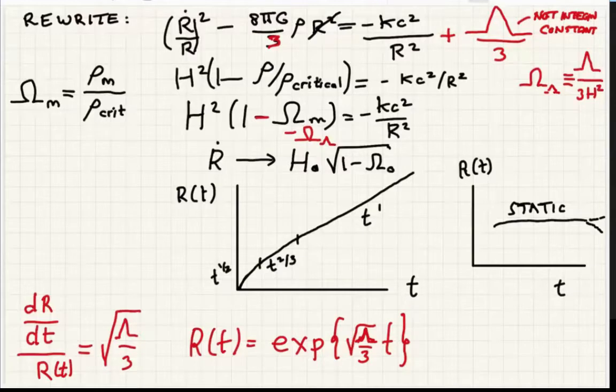Let's group things relative to the critical density here. That's a more useful way to manipulate this equation. I'm going to define that as omega, the ratio of the actual density in the universe compared to the critical density. I've defined omega matter as rho over rho crit. I've also defined omega lambda, the relative importance compared to the critical density of this dark energy.